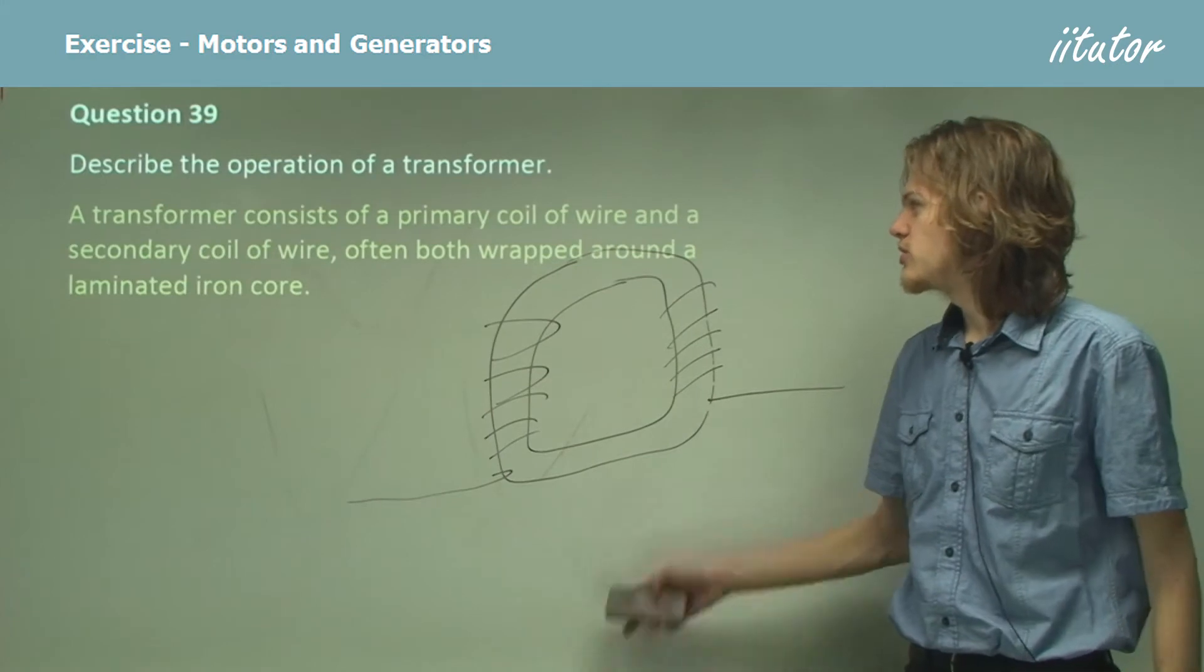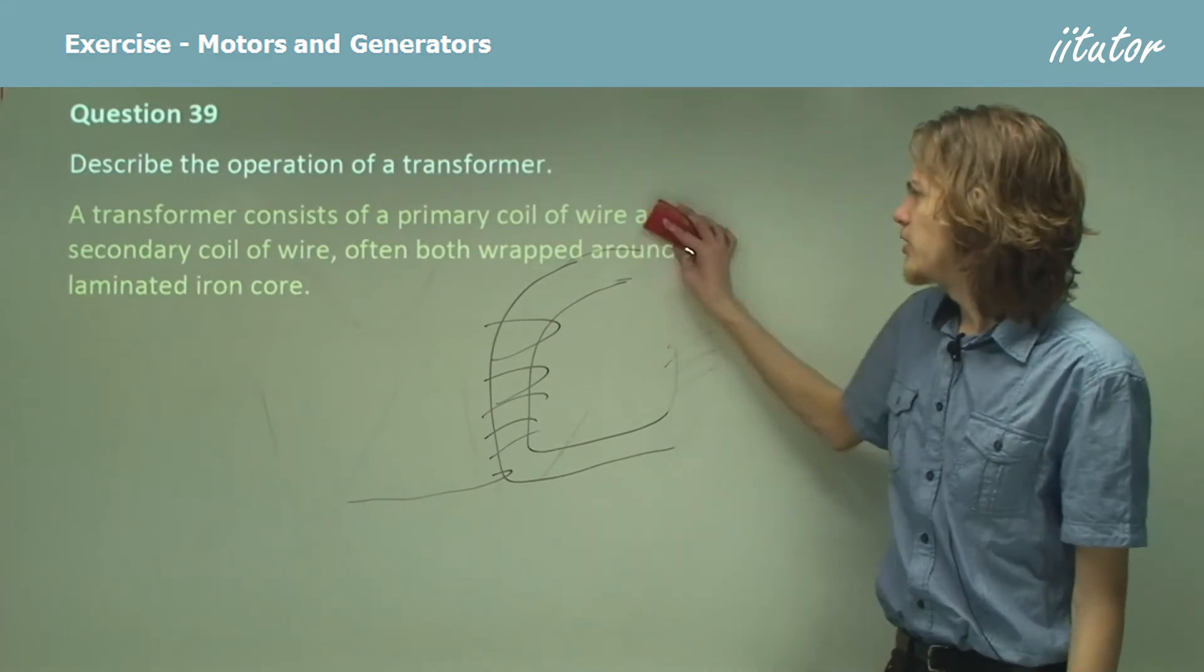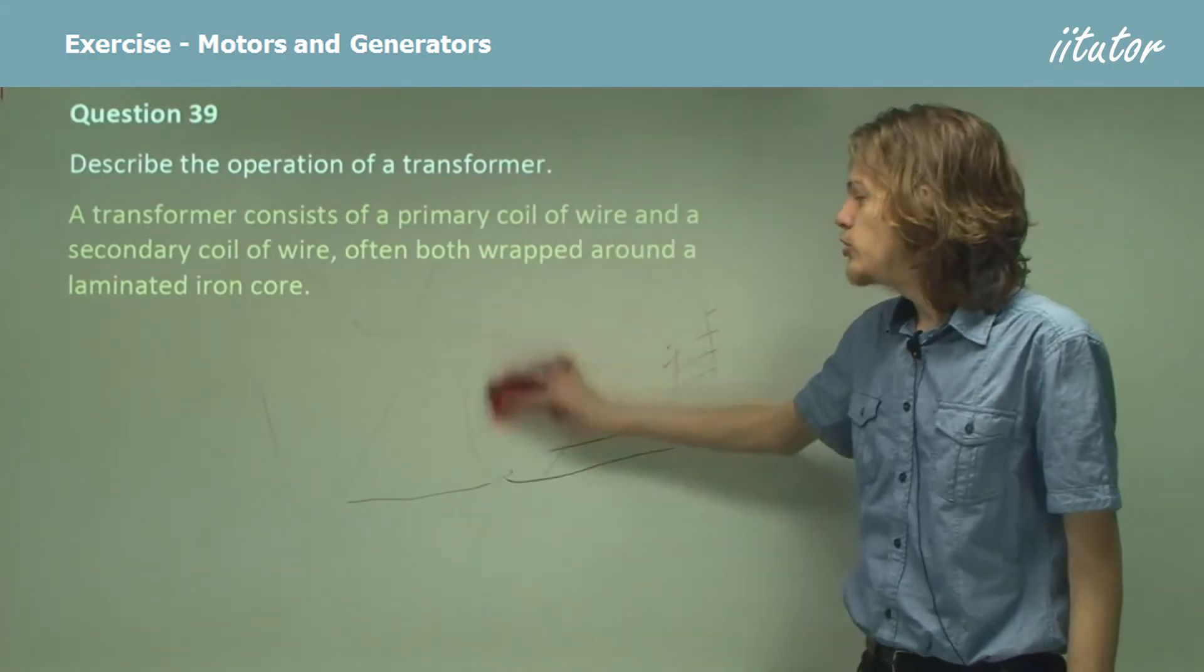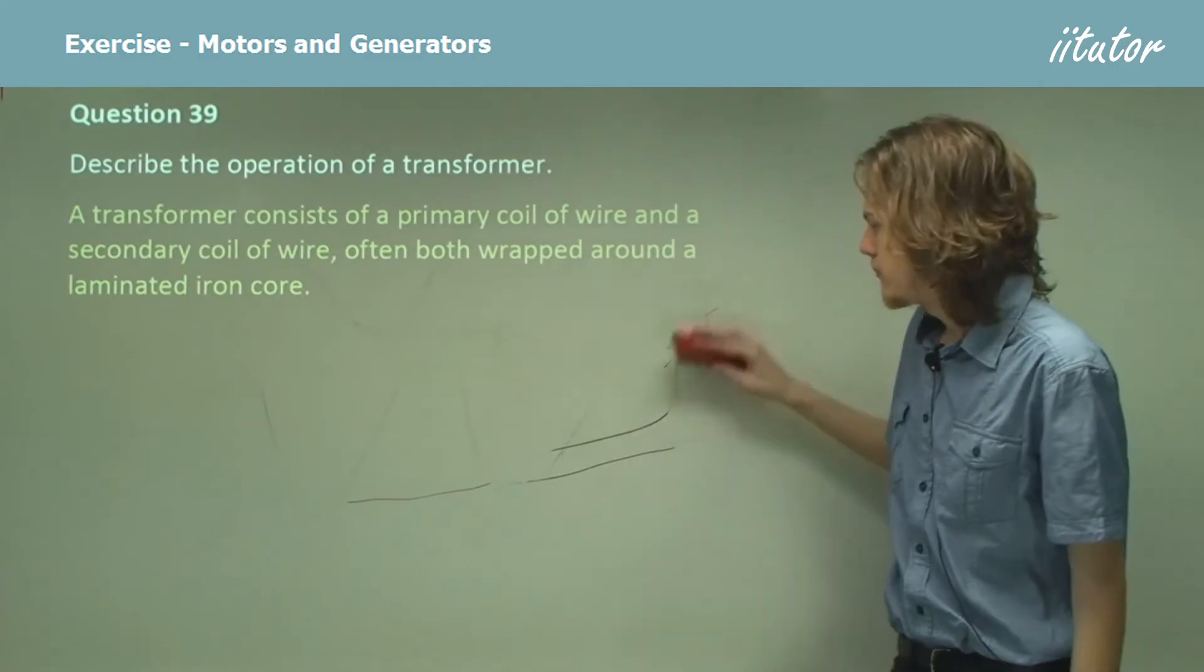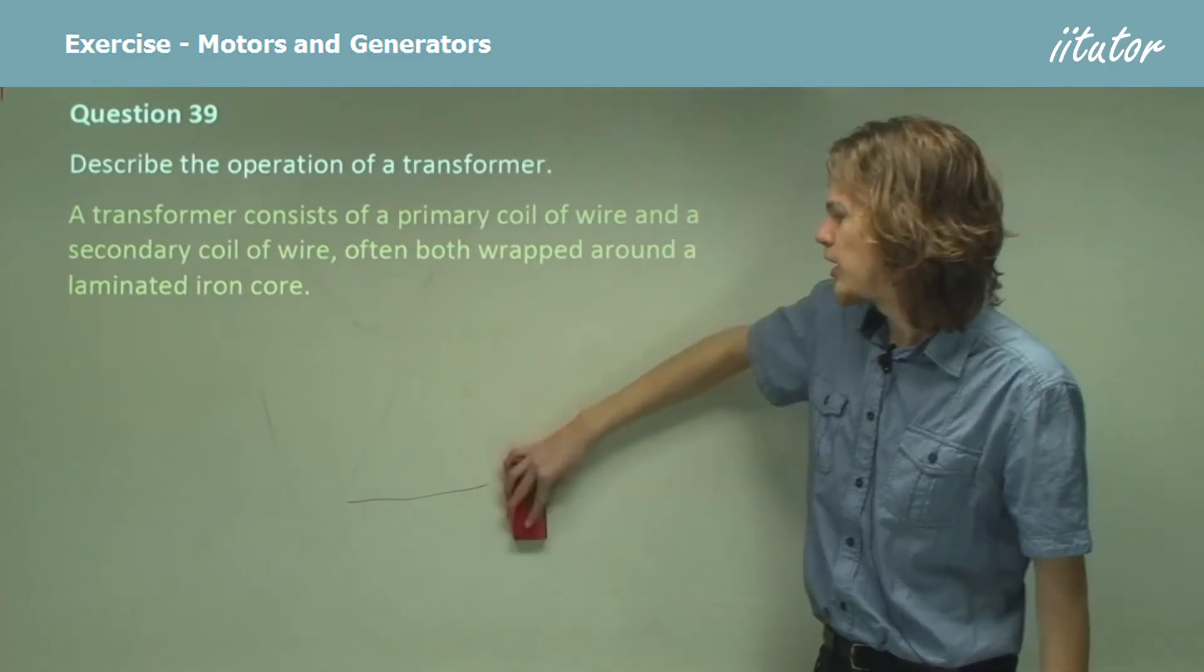So a transformer consists of a primary coil of wire and a secondary coil of wire. Usually they're wrapped around an iron core, but if you really wanted to you could just simply place one inside the other.